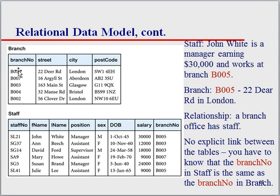I'll go for one branch. We have this branch B005, and we have an address. We can see that John White is an employee of B005, and Julie Lee is also a staff member of branch B005. We can see this in the table layout. There's a table with the branch information, a table with staff information, and we can see that John and Julie are both in B005.